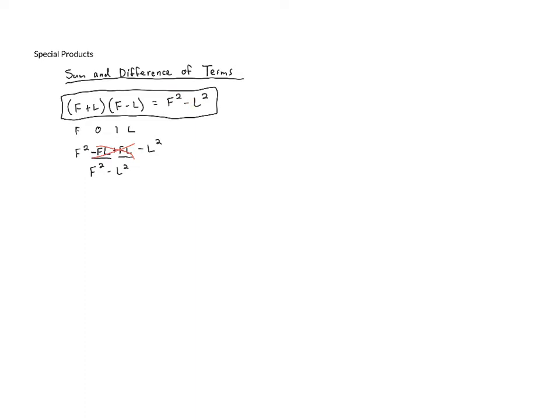It's like a recipe it tells us how to get to the answer much more quickly than going through the process of foiling and then combining like terms. This can be used whenever we have a sum of two terms times a difference.